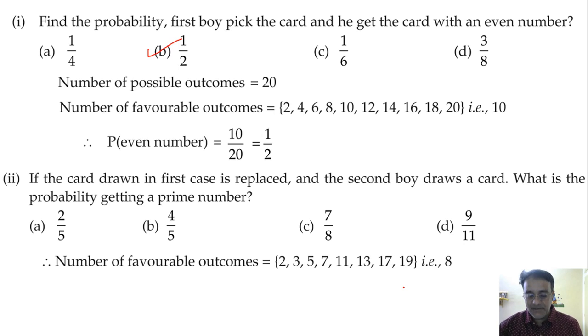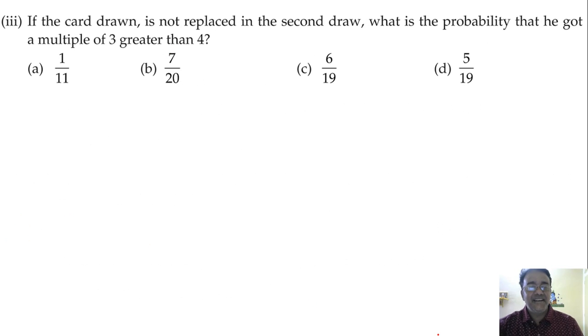So what is the probability? 8 by 20. 8 by 20, so which option is the correct one? 2 by 5, so correct option is A, right.